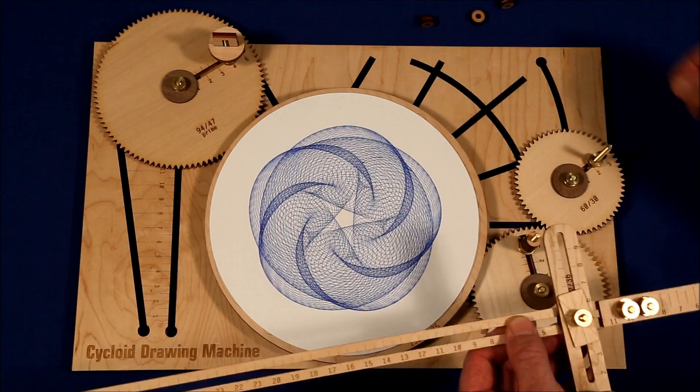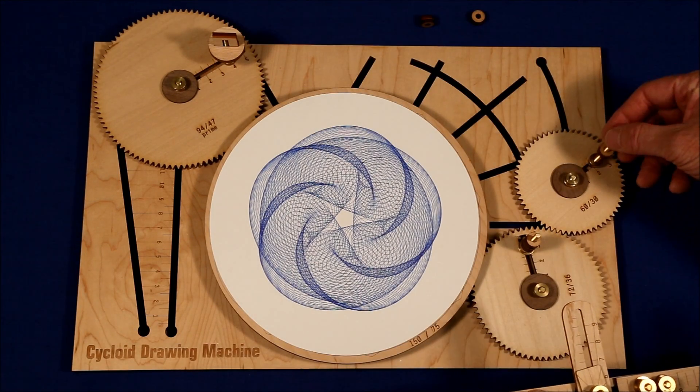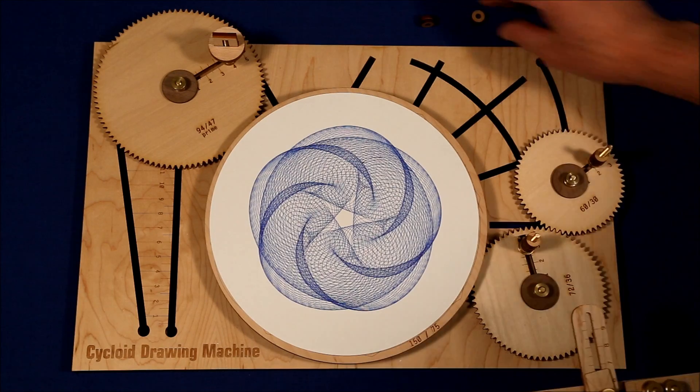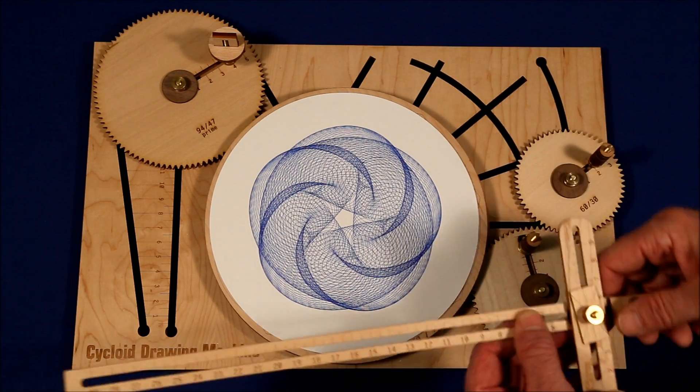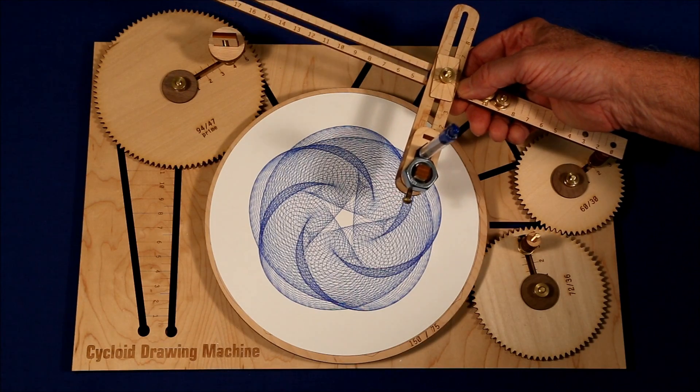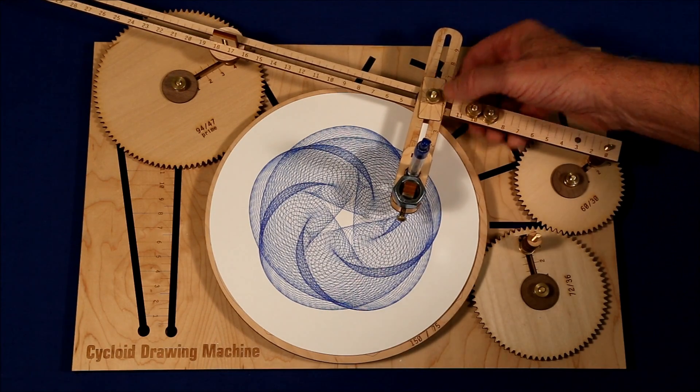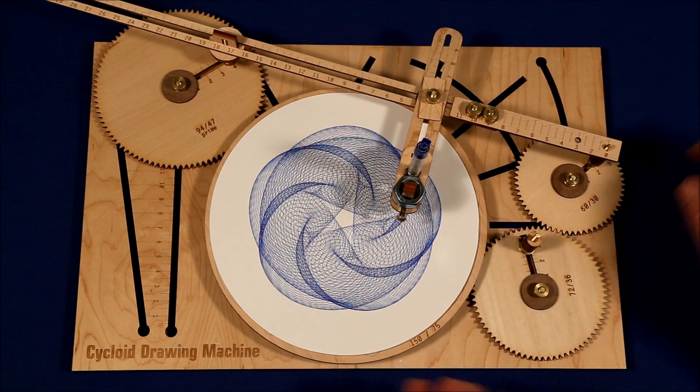Because if you just start throwing gears on the board, you're going to get some great shapes, but it's kind of like parachuting into the middle of an Amazonian jungle. You may see some beautiful things, but you don't know where you are or how to get back.